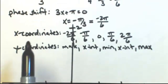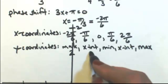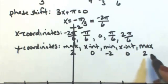So my y-coordinates, using my amplitude of 2, would be 2, 0, negative 2, 0, and 2.